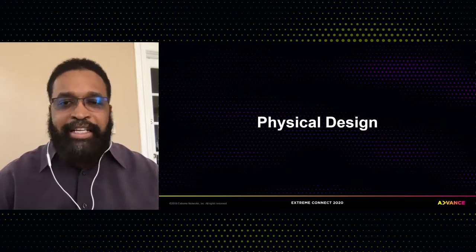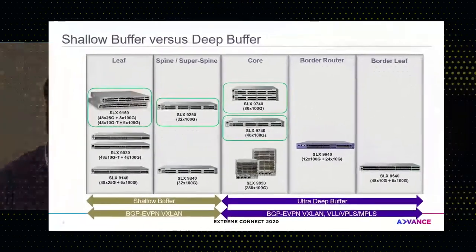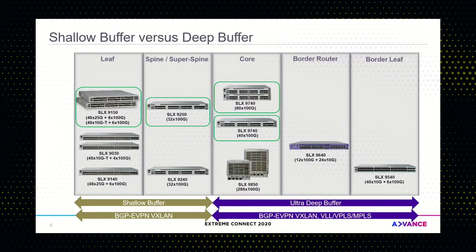Let's look at the physical design. First, I'd like to show you the Xtreme SLX portfolio of switches that we primarily use inside the data center space. You have a number of switches categorized by where they are placed inside the data center — whether leaf switches, spine switches, core, border router, or border leaf switches. It's also important to categorize whether these switches are for shallow buffer or deep buffer, as that becomes relevant when connecting interfaces at different speeds.